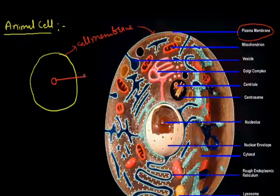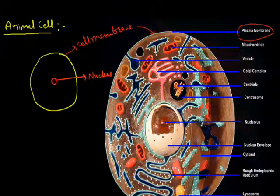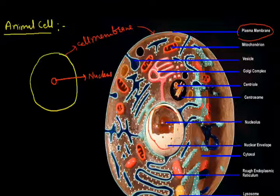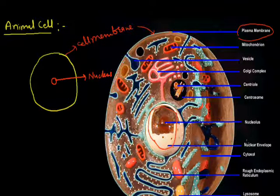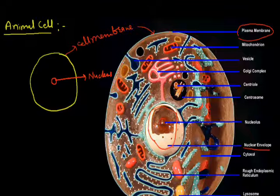This is the nucleus. In this diagram, this structure is known as the nucleus. It has a membrane we call the nuclear membrane. It also has another minute structure inside it, which is known as the nucleolus.